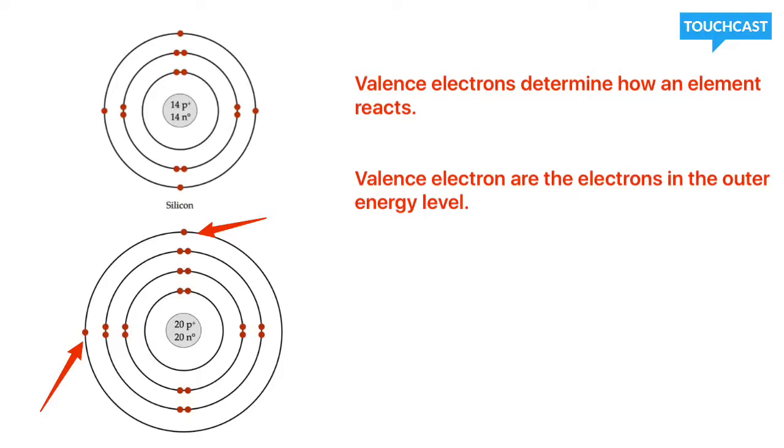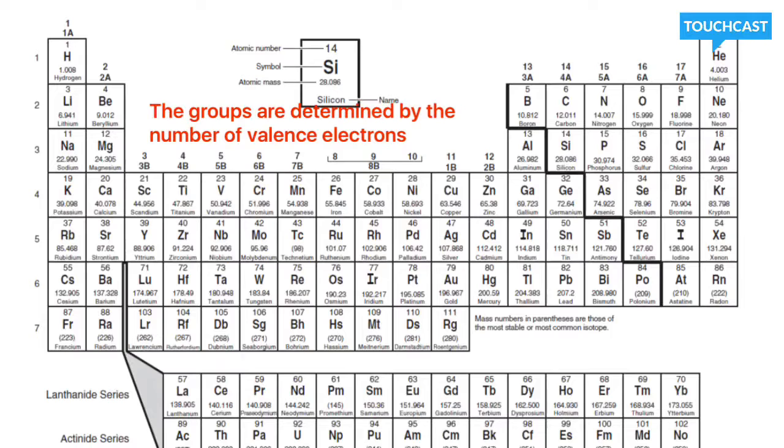Let's go ahead and look at the periodic table to determine how we figure out how many valence electrons each atom has. The group number is determined by the number of valence electrons each atom has for that particular element. For example, group 1,